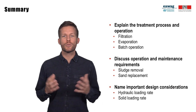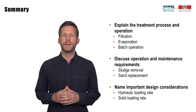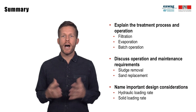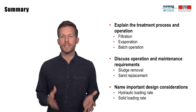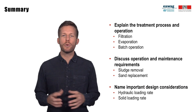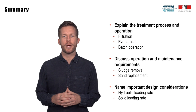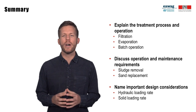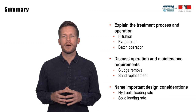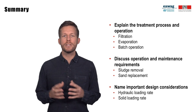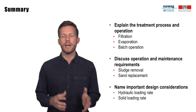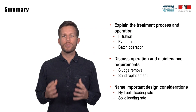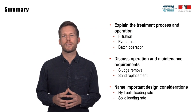In this module, we learned that the treatment process of unplanted drying beds is based on filtration and evaporation. Unplanted drying beds operate in batch mode and require removal of sludge from the surface of the drying beds. In addition, the replacement of the sand filter layer is required for reliable operation. Drying beds need to be designed based on the local climate and sludge characteristics. The most important design parameters include the hydraulic and the solid loading rate.